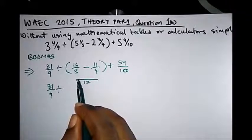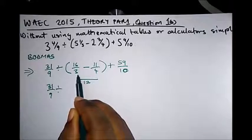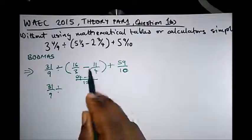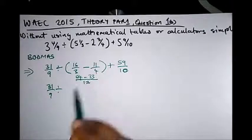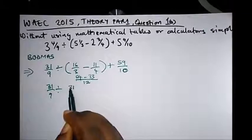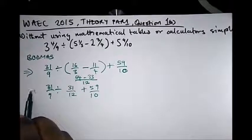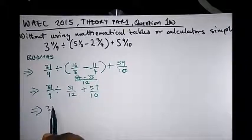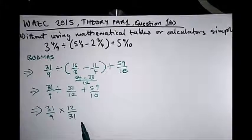With LCM 12: 3 goes into 12 four times — 4 times 16 gives 64. Minus: 4 goes into 12 three times — 3 times 11 gives 33. Subtracting gives us 31 over 12. Then we have plus 59 over 10. The next operation is division: so we have 31 over 9, multiplied by 12 over 31.